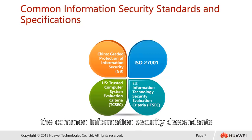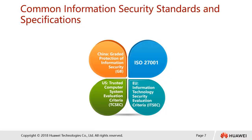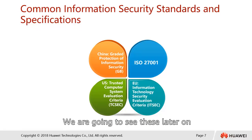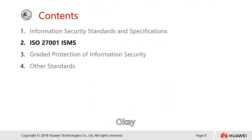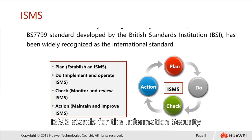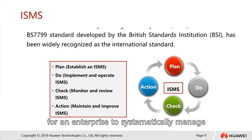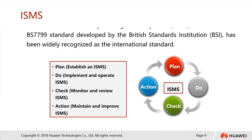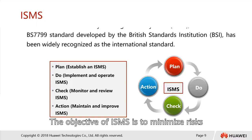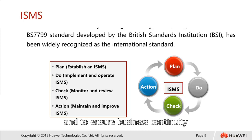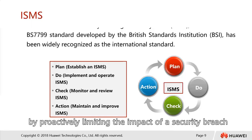What you can see here are some of the common information security standards and specifications that we will review later. ISO 27001 ISMS — ISMS stands for Information Security Management System. This is a set of policies and standard procedures for an enterprise to systematically manage an organization's sensitive information. The objective of ISMS is to minimize risk and to ensure business continuity by proactively limiting the impact of a security breach.